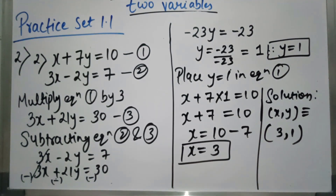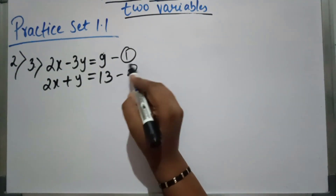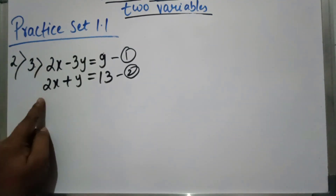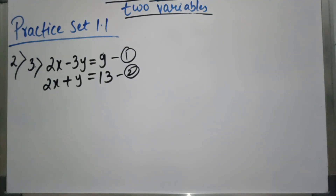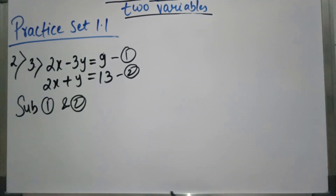Let's move ahead with the third question. First, number the equations as equation 1 and equation 2. Here, we can see that the x variable's coefficient is the same in both equations — so no extra work is needed. We just need to decide whether to add or subtract. If we add, 2 plus 2 gives 4x, but we need to eliminate, so we do subtraction.